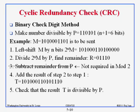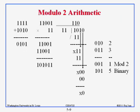In computers and Ethernet we use binary numbers, so we need to know binary mod-2 arithmetic. In mod-2, addition is exclusive-OR (XOR): 1+0=1, 1+1=0, 0+1=1, 1+1=0 — there is no carry. This is different from regular binary arithmetic.